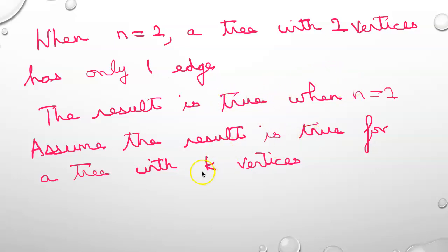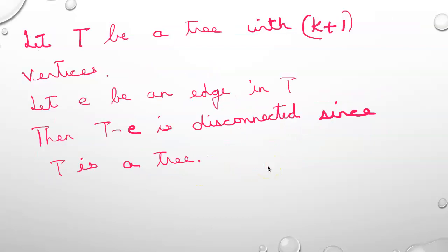Assume the result is true for a tree with k vertices. That means if T is a tree with k vertices, it will have k-1 edges. Now to proceed with induction, let T be a tree with k+1 vertices. We want to prove that T has k edges.